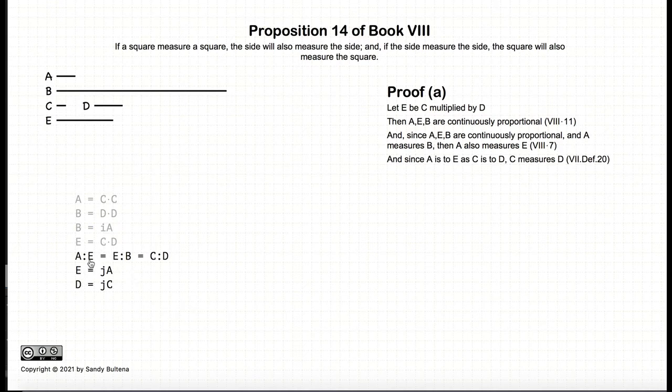But we also have that A to E is equal to C to D. And by definition of ratios equaling each other, this means that if A measures E, J times, then D measures C, J times. And that is the definition of the equality of ratios. So thus we've shown that if A measures B, then C also measures D.